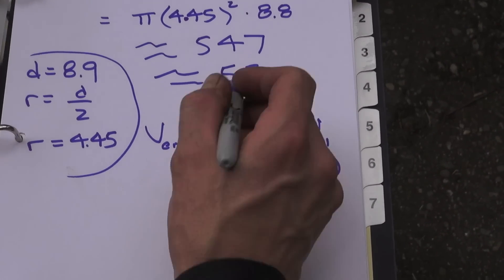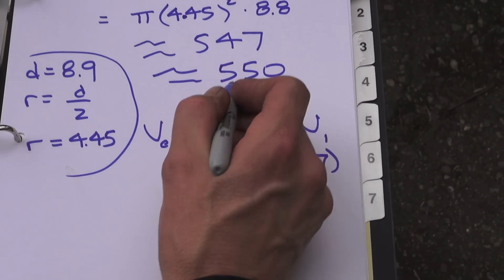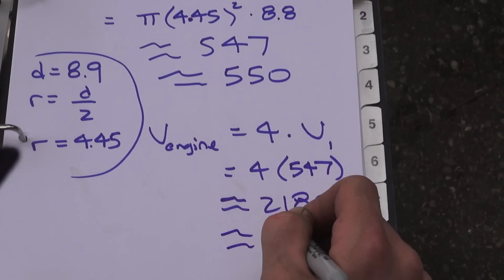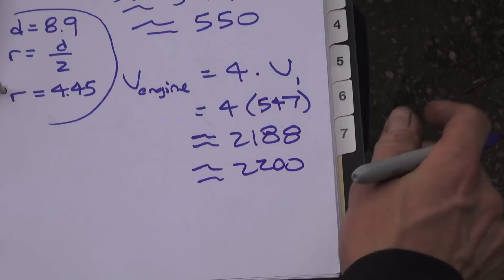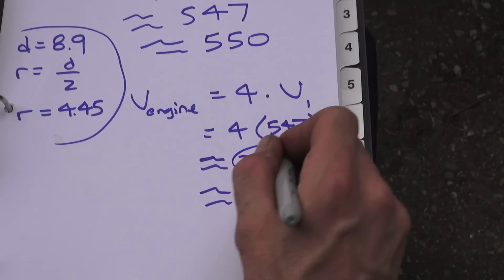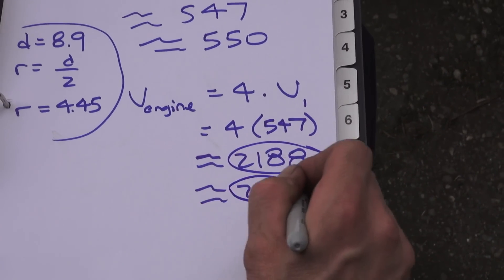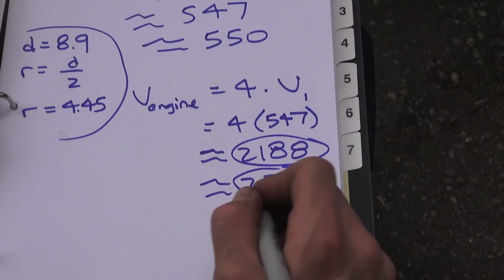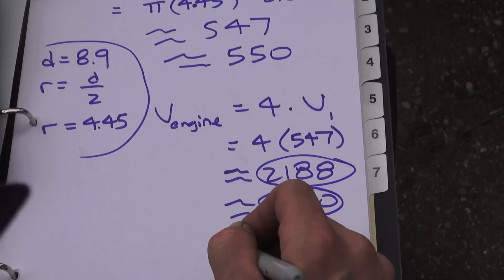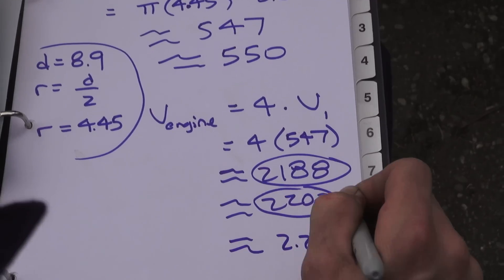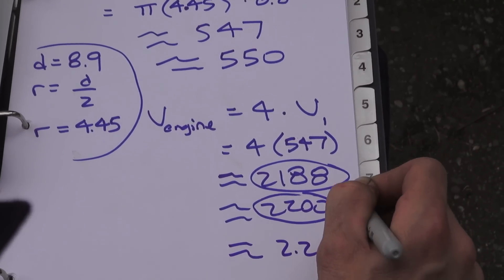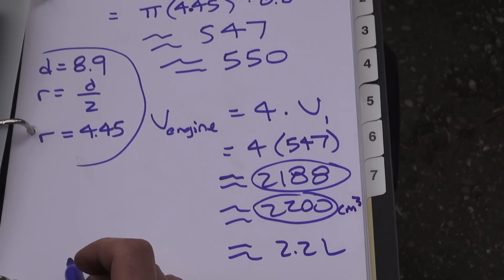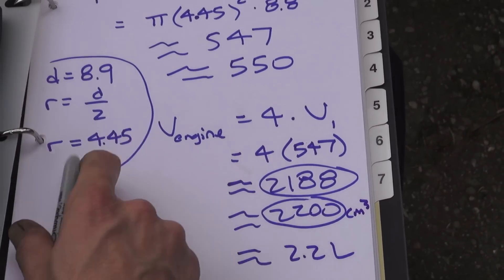Four times 547 gives us about 2188. If I had used 550 per cylinder, I would have gotten exactly 2200. It doesn't matter because they usually just round off when they tell you the engine size.